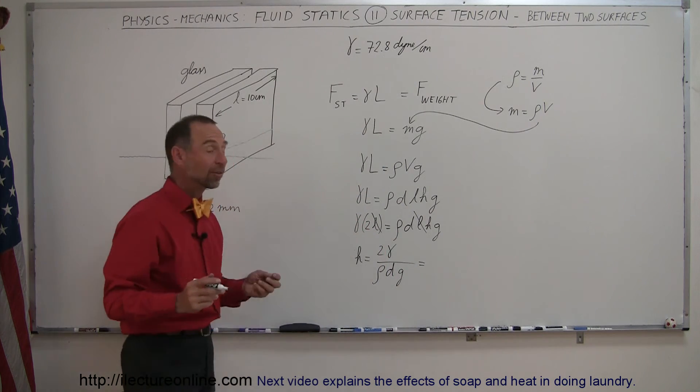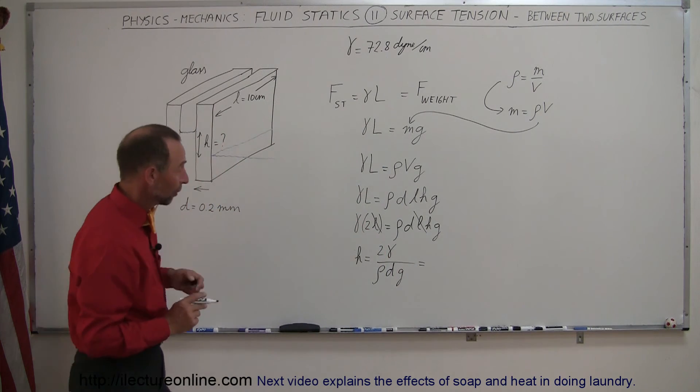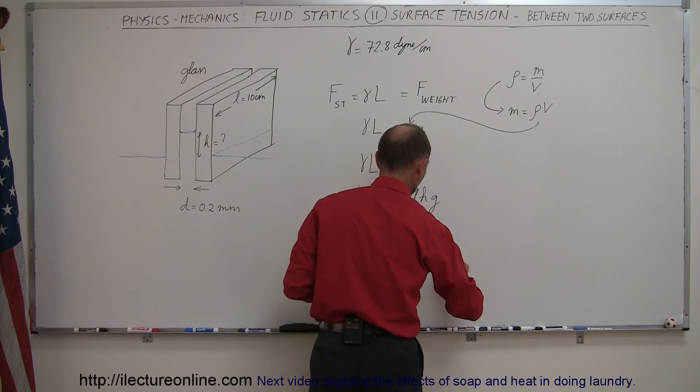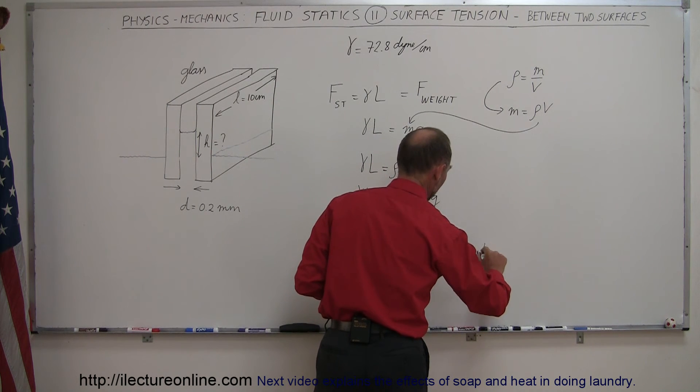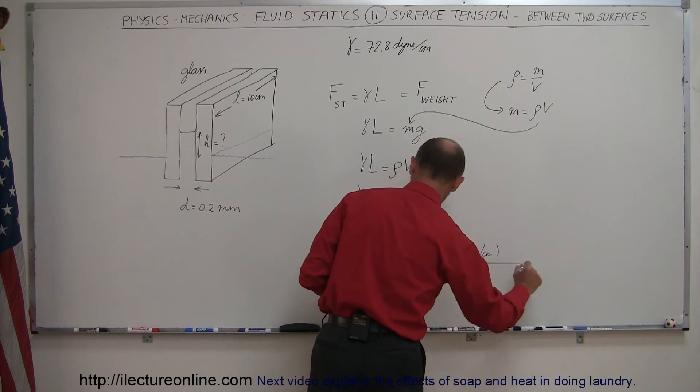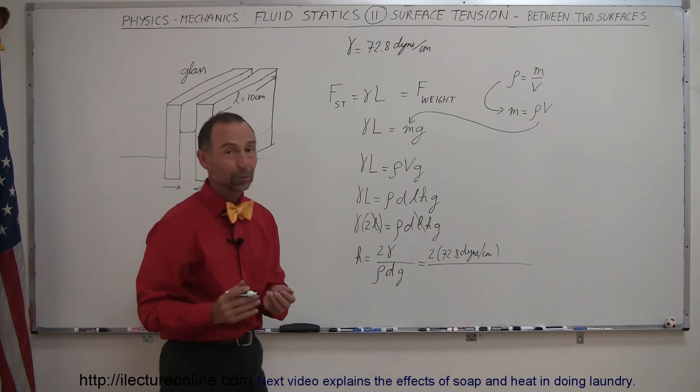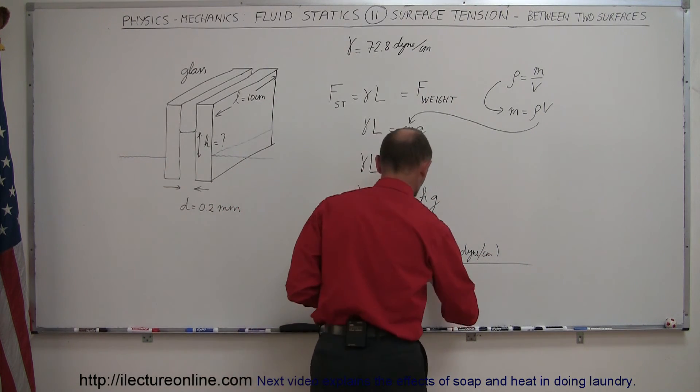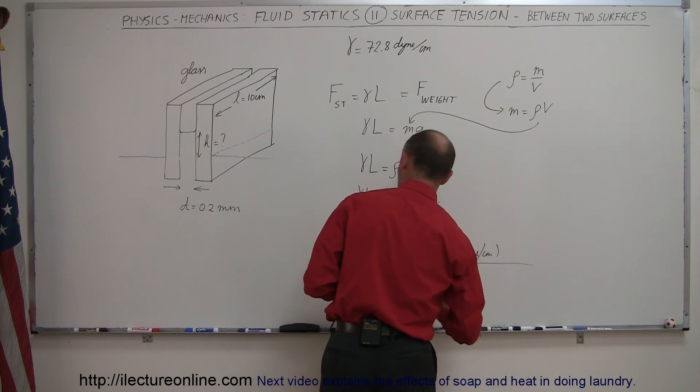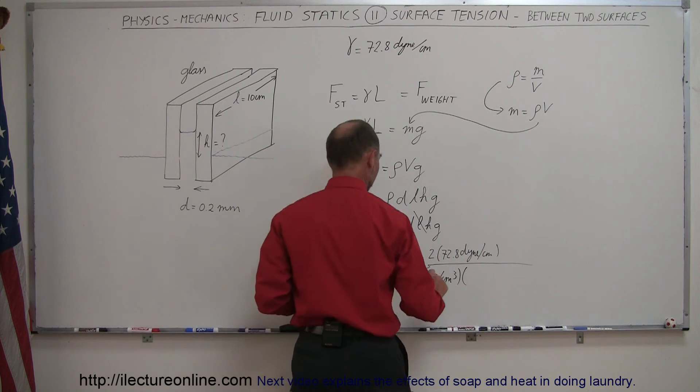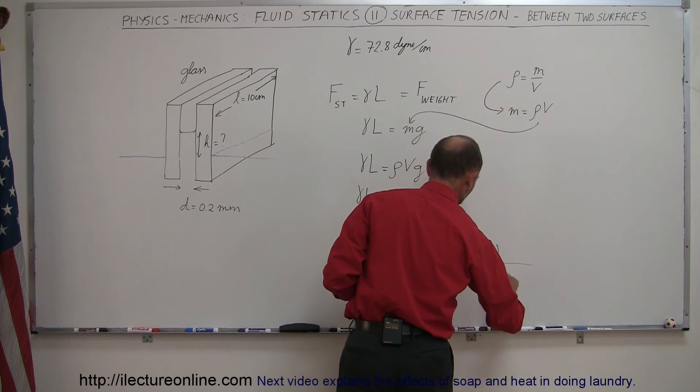Now we're ready to plug in the numbers. We have the coefficient, which is 72.8 dynes per centimeter, divided by the density of water, which is 1 gram per cubic centimeter.